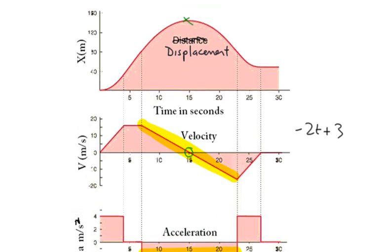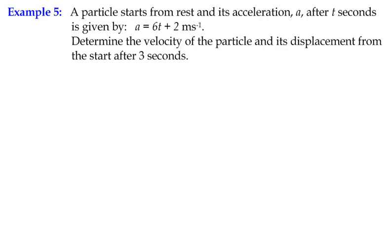So that's the connection between the three: displacement, we can differentiate to get velocity; velocity, we can differentiate to get acceleration. Now let's have a look at example 5. A particle starts from rest, and its acceleration A after t seconds is given by the function A equals 6t plus 2 metres per second squared. Determine the velocity of the particle and its displacement from the start after three seconds.